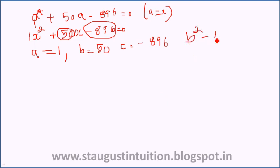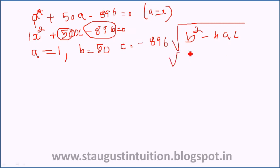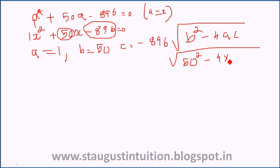We calculate the discriminant: root of b squared minus 4 times a times c. That is root of 50 squared minus 4 times 1 times negative 896. So 50 squared is 2500, minus 4 times negative 896.